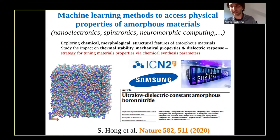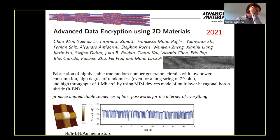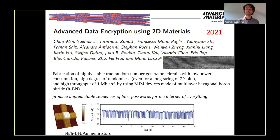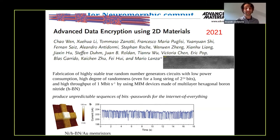Amorphous boronitride is not used only for electronics. Recently, in a very similar metal-insulator-metal structure, this material has been shown to enable a true random number generator — a kind of application close to neuromorphic computing, but also useful for a much wider range of applications like the Internet of Things. My last slide is related to the use of boronitride multi-layer h-BN for neuromorphic computing.